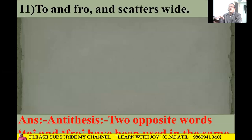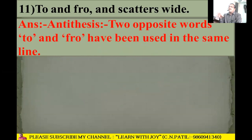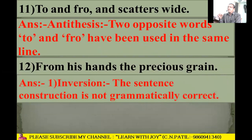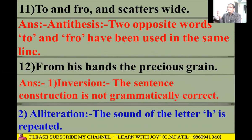Next: 'To and fro and scatters wide.' Antithesis is there because two opposite words are placed side by side — 'to and fro.' Next: 'From his hands the precious grain.' Inversion is there as the sentence construction is not in grammatical order. Alliteration is also there with 'h' in 'his' and 'h' in 'hands.'